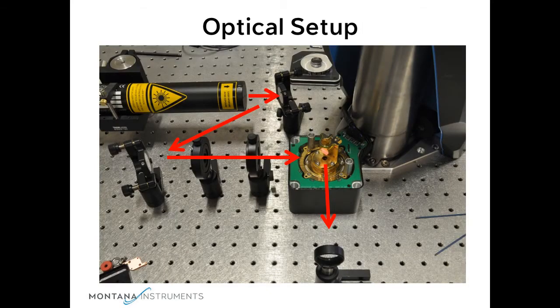Note that this optical setup can be completely aligned with the inner and outer window assemblies removed. Then once the housing is reassembled, the experiment could be run at low temperatures.